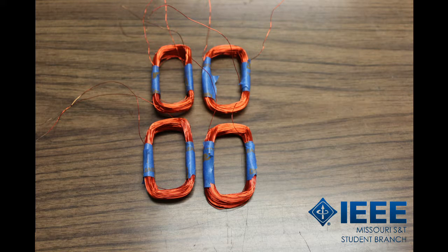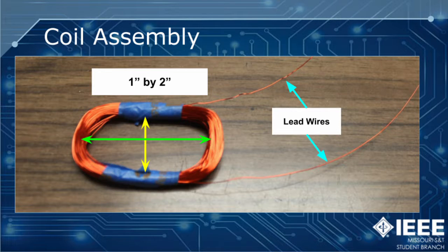First, we need to create our wire coils with the mag wire. We will need four coils and we want them to be oval shaped with 50 turns. The larger dimension of the oval should be about 2 inches, while the shorter dimension should be about 1 inch. Be sure to leave about 5 inches of extra wire on each end of the coil to make connections later.